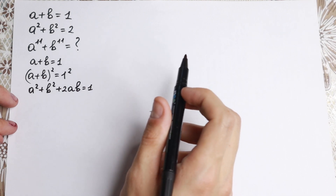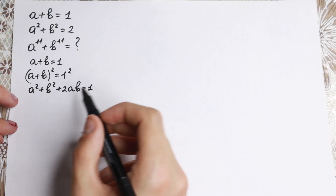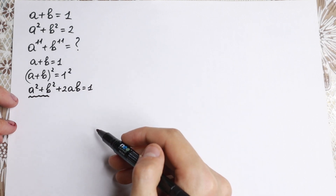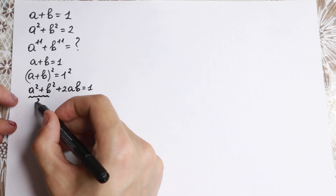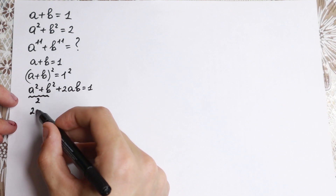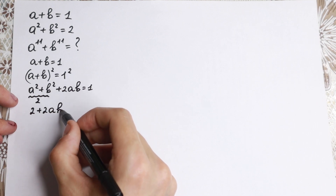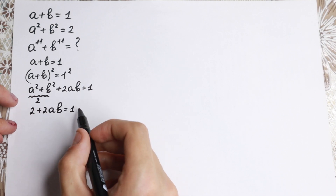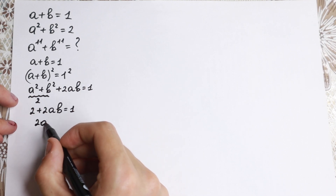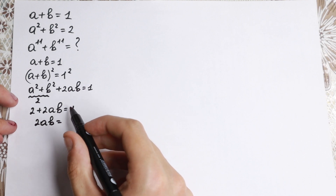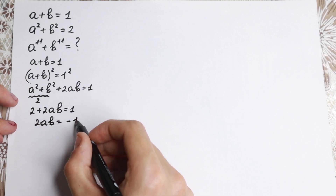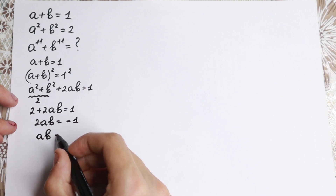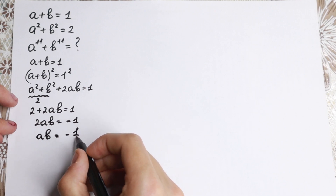Now, one really interesting thing: we know that a squared plus b squared equals 2 from the beginning, so this equals 2. So we have 2 plus 2ab equal to 1. Bringing the 2 to the right-hand side, we get 2ab equal to minus 1.